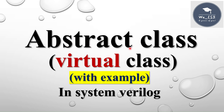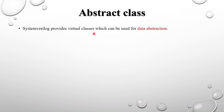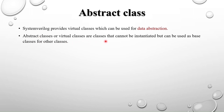Welcome back to SystemVerilog sessions. In this session I'm going to discuss abstract class or virtual class in SystemVerilog. SystemVerilog provides virtual classes which can be used for data abstraction. Data abstraction means it provides only the essential information about the data — it will hide the background details or implementation, providing only the essential information about the data outside the class scope.